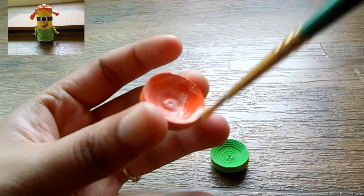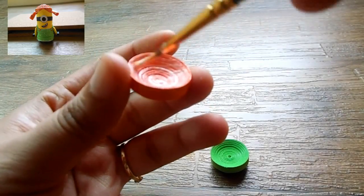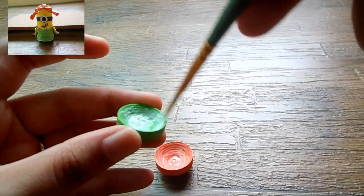Next, we need to apply Fevicol on the inner side of both these domes. This is so that it can hold its shape. Once you've applied Fevicol, keep it aside till it dries.